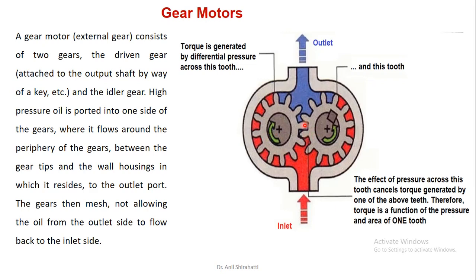Here is where the meshing of the teeth takes place. Fluid flows in from one side, and when it rotates it goes towards the output. The torque is generated by differential pressure across the tooth of one gear and across the tooth of the other. The effect of pressure across a tooth cancels the torque generated by the one above it, so the torque is a function of pressure on one tooth.